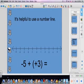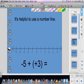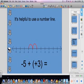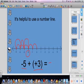I'm going to start from 0 and go to negative 5, counting 1, 2, 3, 4, 5. Then I'm going to add positive 3, going back the other way: 1, 2, 3. I end up on negative 2. So negative 5 plus positive 3 equals negative 2.